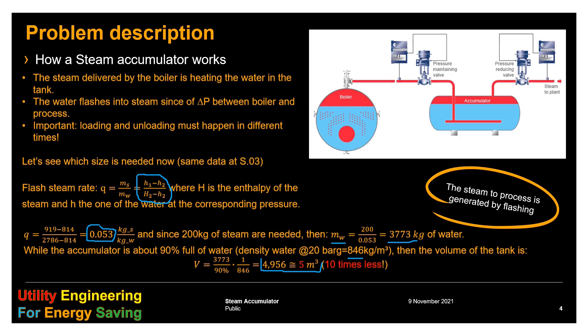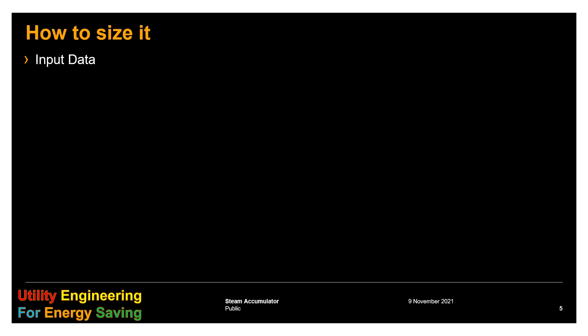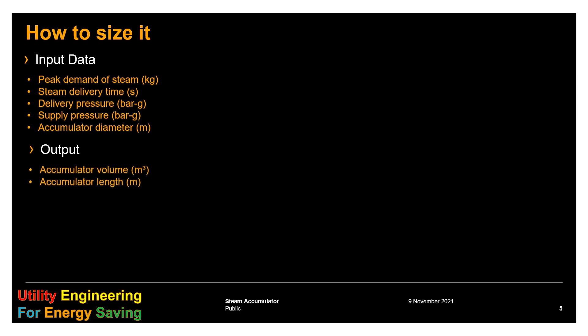Now we see how to size a steam accumulator. The input data are: peak demand of steam in kg, delivery time in seconds, delivery pressure, supply pressure, and the accumulator diameter. The output is the accumulator volume in cubic meters and its length in meters.